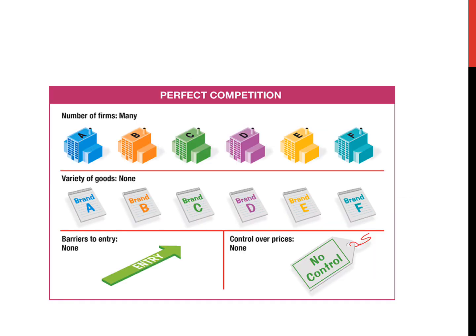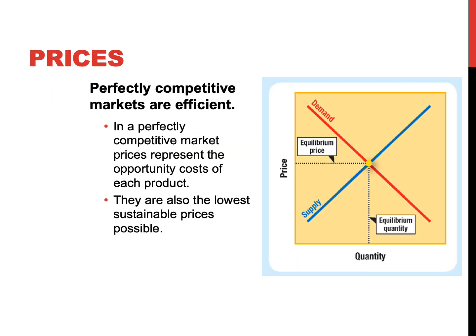So those are our qualifications for perfect competition: many firms and many buyers, identical variety of goods, very low or no barriers to entry, and sellers have no control over price — they are price takers. Practically speaking, in perfectly competitive markets, prices are generally the lowest sustainable number. There's not a lot of markup or profit being made. Perfectly competitive markets are very efficient because the price of the product equals the opportunity cost.